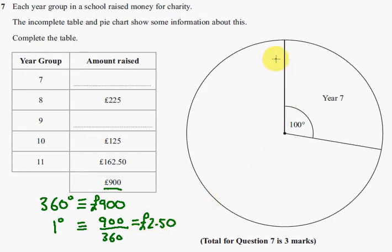Now, if I had a slice here that was 1 degree, I'd know that's £2.50. But I've got a slice of the pie here which is 100 degrees, so I'm going to have to do 100 times £2.50, which is £250. So we know the Year 7s slice of the pie is worth £250. I can write that in, £250.